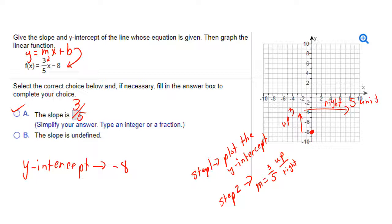1, 2, 3, 1, 2, 3, 4, 5. And I will put a second point. That second point creates my line. And the line is my final answer.